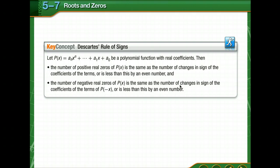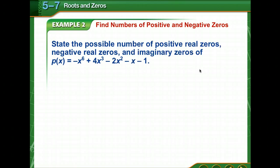French mathematician René Descartes discovered a relationship between the signs of the coefficients of a polynomial function and the number of positive and negative real zeros. To state the possible number of positive real zeros, negative real zeros, and imaginary zeros of a polynomial, we use Descartes' rule of signs. One quick tip: if a zero of a function is at the origin, then the sum of the number of positive real zeros, negative real zeros, and imaginary zeros is reduced by how many times zero is a zero of the function.